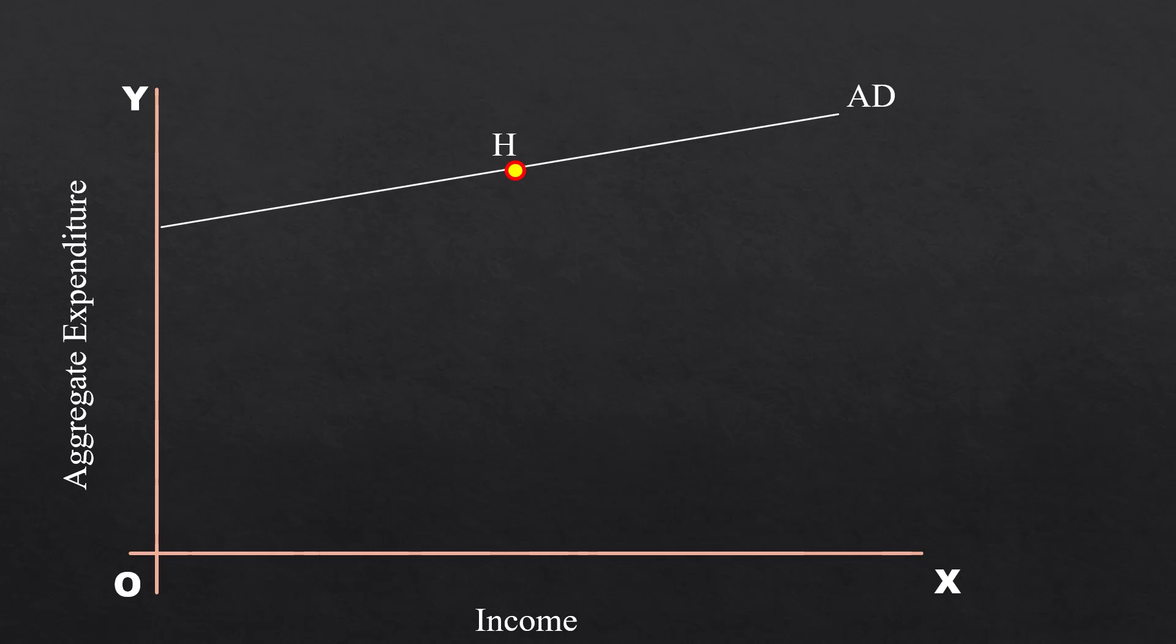Take a point on the curve, say H. Travel vertically down to X-axis. It represents 100 rupees income. In our discussion, the word income normally refers to national income. Travel horizontally to the Y-axis. It represents 90 rupees aggregate expenditure.